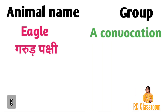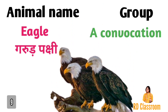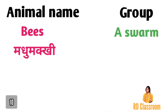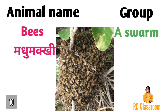Number nine is eagle, ya fir garur pakshi, jiske group ko a convocation kaha jata hai. Number ten is bees, ya fir madhu makkhi, jiske group ko a swarm kaha jata hai.